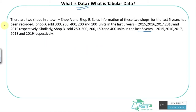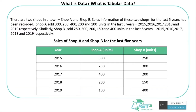So what is tabular data? I have a piece of information that is currently expressed in a textual, paragraph-like way. Similarly, I can represent the same thing in tabular data, which is a bit easier to grasp and read compared to going through long passages with words and numbers combined. So what would that look like? If the title of the table is 'Sales of Shop A and Shop B for the Last Five Years,' with years 2015 to 2019 listed.